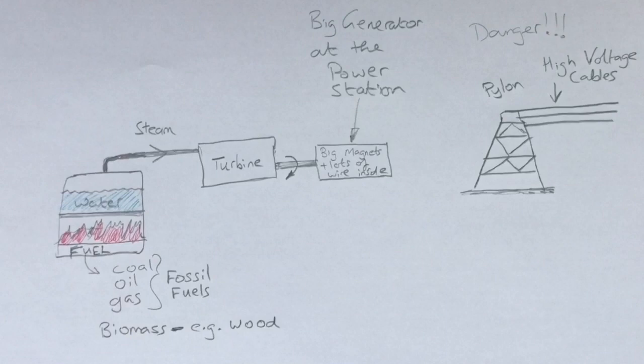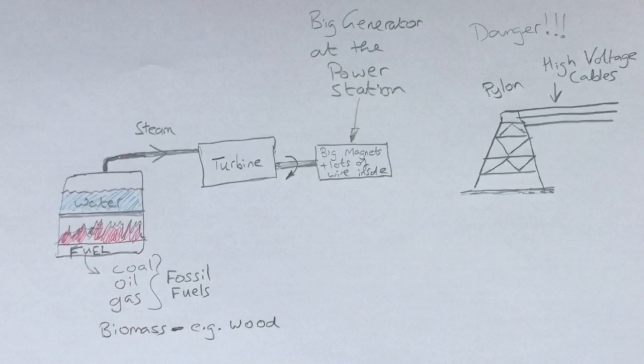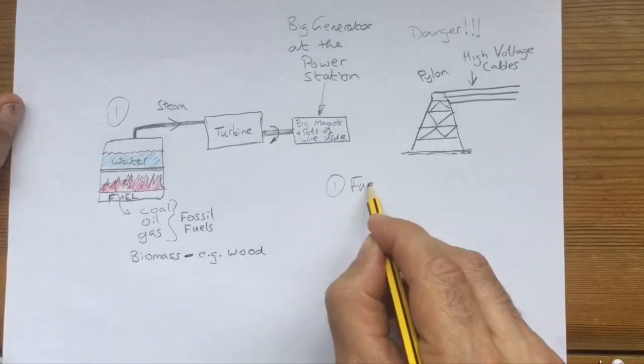This steam is created in a boiler simply by burning fuel to heat water up. The main fuels used are coal, oil, and gas, and also biomass. So to summarize, step one is that you burn some kind of fuel.